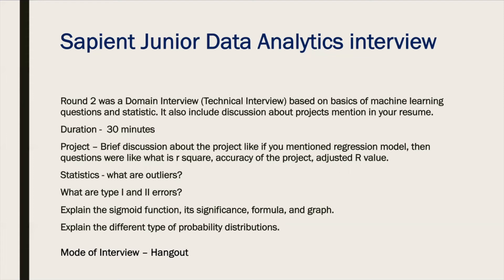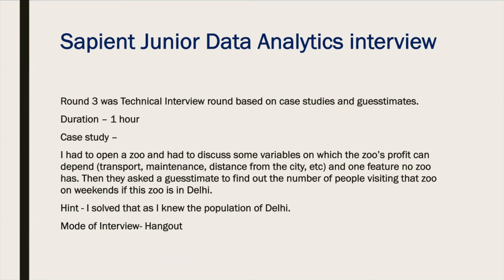After clearing round one, there was round two — the domain interview round. This round was about the basics of statistics and also included a brief discussion about the projects mentioned in your resume. For example, if you mentioned a regression model, questions were like: what is R-squared, what do you mean by adjusted R-squared, what are the formulas of R-squared, and what is the accuracy of your project? In statistics, they asked basic questions like what is an outlier, how do you define Type 1 and Type 2 errors, and explain different types of probability distributions. The mode of interview was Hangout and the difficulty level was easy.